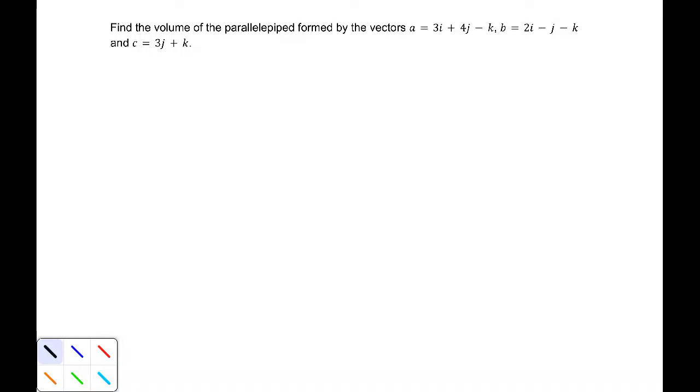Find the volume of the parallelepiped formed by the vectors a = 3i + 4j - k, b = 2i - j - k, and c = 3j + k.